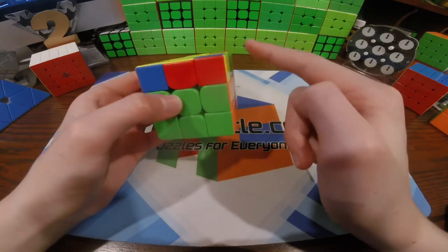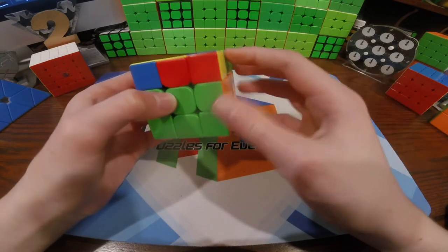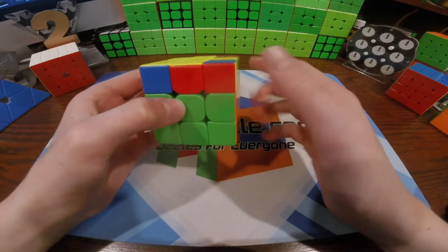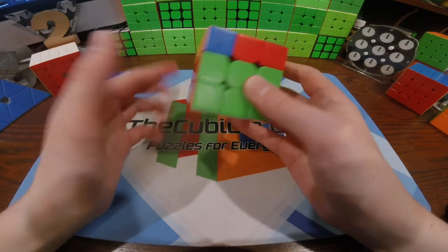Now here, I saw the EO was solved. This corner was facing towards the right, and this corner was facing towards the back, which means I knew that this was twisted here.